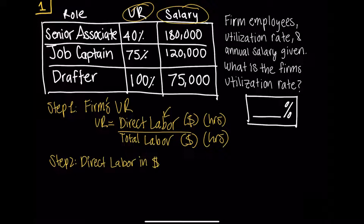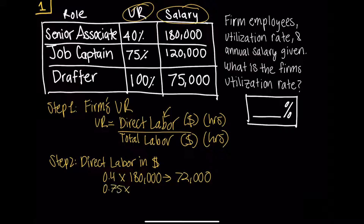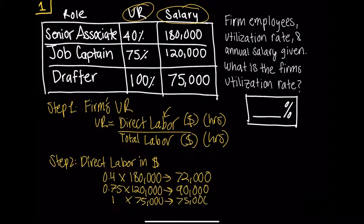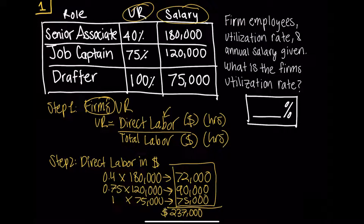So in this case it's quite simple. I take 40% or 0.4, multiply that by $180,000 for the senior associate — that gives us $72,000. For the job captain, 75% utilization rate: 0.75 multiplied by $120,000 equals $90,000. And for the drafter, 100% utilization rate is just 1 multiplied by their $75,000, which amounts to $75,000. Now we take the total amount and get $237,000. That is the direct labor.